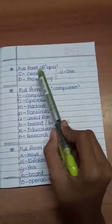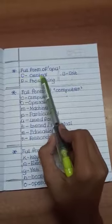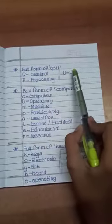Full form of CPU. C means central, P means processing, U means unit.